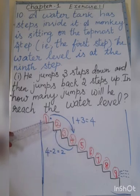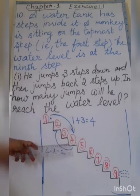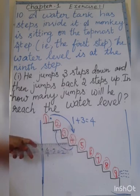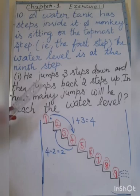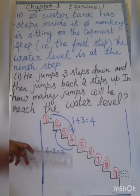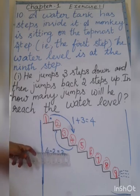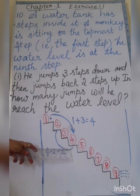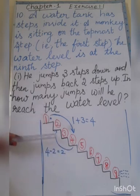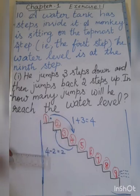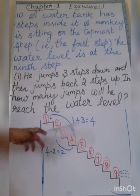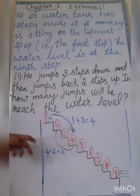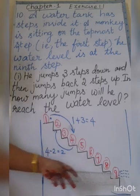Now, first he jumps at the first step, and 3 jumps at the 3rd step. Steps up. Now the monkey is at the second step. Again, he jumps back 2 steps up. The second jump is back — he jumps back 2 steps up. We move to the solution. This process will be continued until the monkey reaches the 9th step.